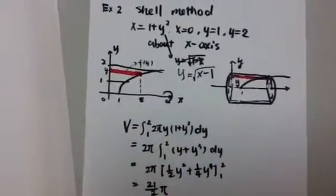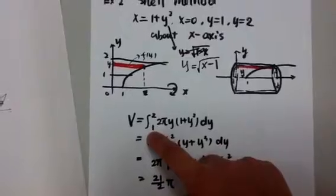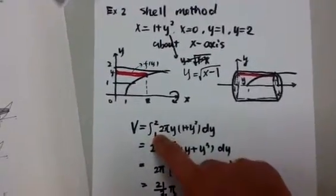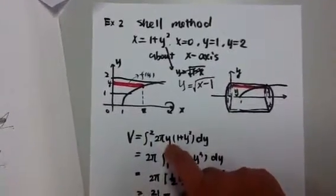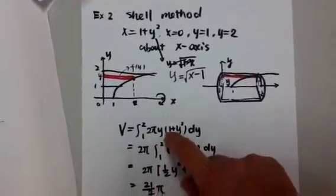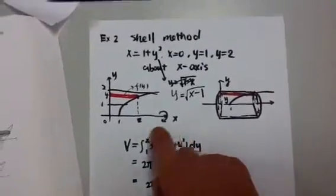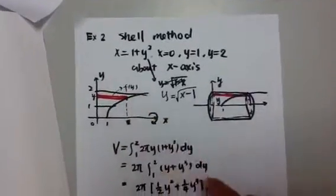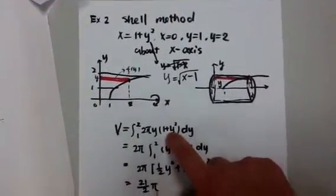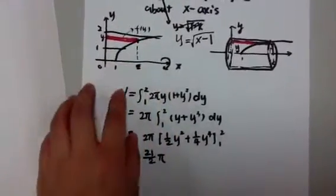Okay? So I use the volume formula. It's integrating from 1 to 2, 2 pi y. Y is the radius times shell height, which is 1 plus y squared. Because the shell height is here. It's on the curve. So it's the value of the function. Okay, so this is set up.